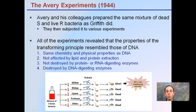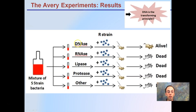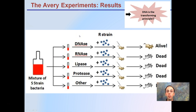This image shows a visual representation of the Avery experiment. We have our mixture of the S-strain bacteria — the smooth strain that is virulent and causes death — to which they added different enzymes, recognized by the suffix -ase.